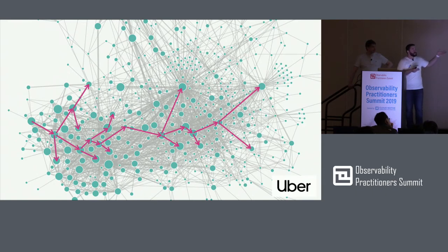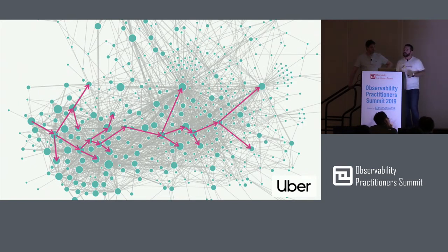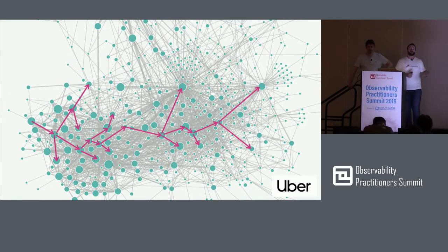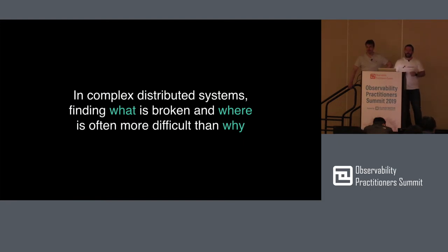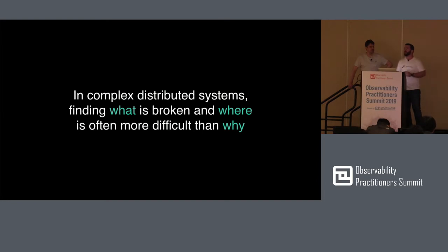Distributed transactions can be very complex, and there are hundreds of thousands happening every second. Investigation for actual incidents usually starts with a high-level business metric — for example, the number of Ubers being booked in New York City is currently down. Why? You need to go look at your observability information to answer those questions. When the architecture is so complex, it's actually hard to troubleshoot the outage and get to root cause quickly. You want to know what caused it, but arguably that's usually easier than determining what happened and where it happened.